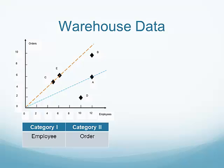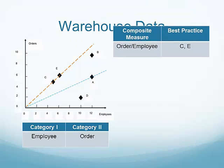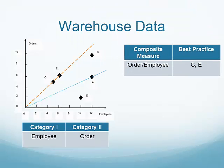Therefore, employees are treated as a Category 1 measure and the number of orders processed is treated as a Category 2 measure. In this case, the composite measure is just a ratio of the number of orders processed by the number of employees.